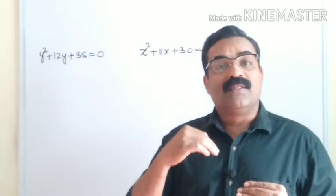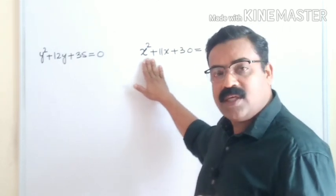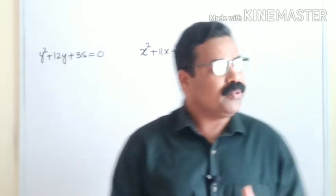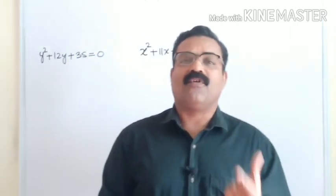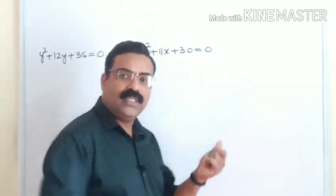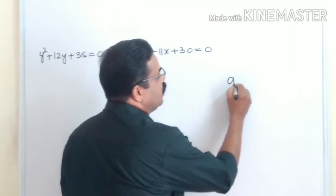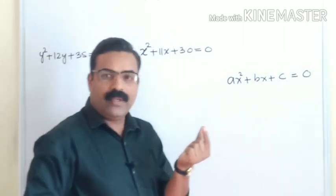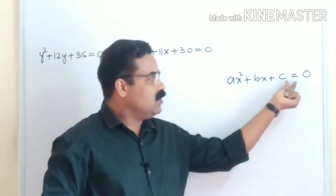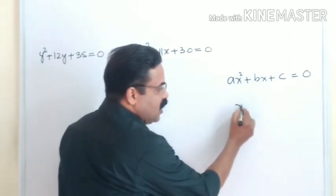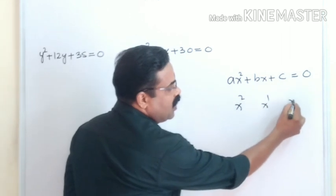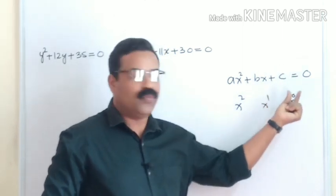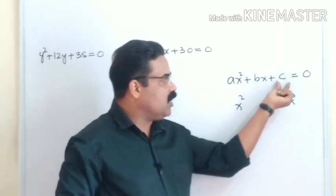Using shortcut methods, we will find out the value of x. Before going to these questions, let us understand the general formula of a quadratic equation. A quadratic equation can be expressed as ax² + bx + c = 0. Here you can see x² has power 2, x has power 1, and the constant c is x to the power 0, which equals 1. So ax² + bx + c = 0 is the general formula.